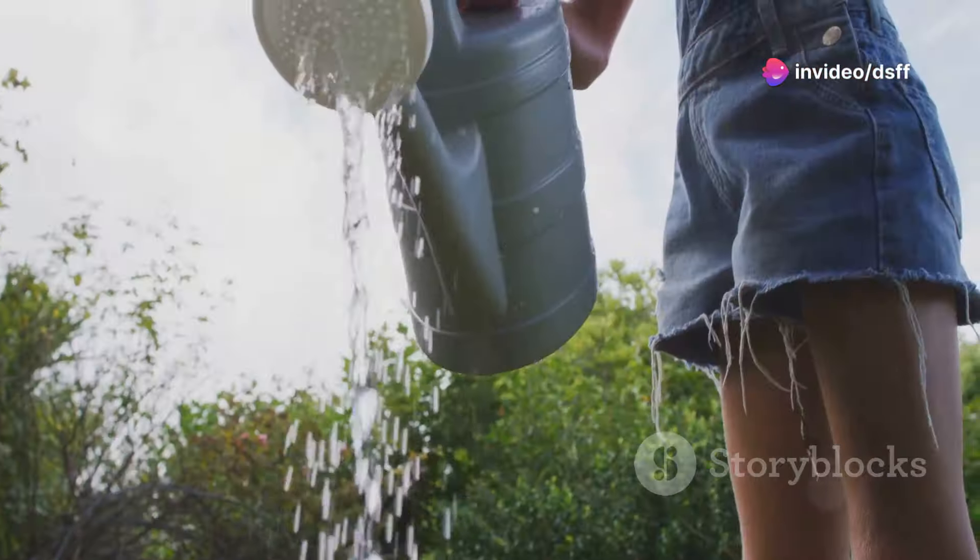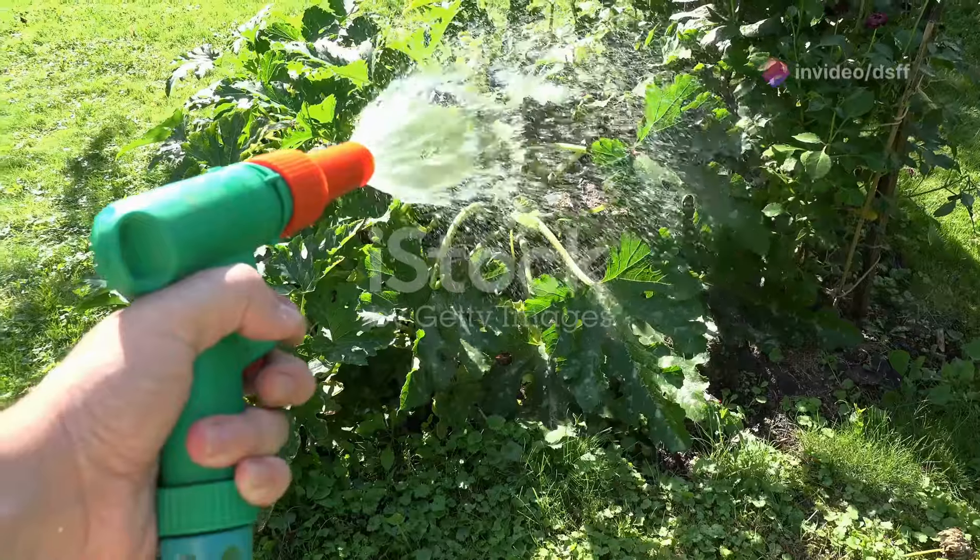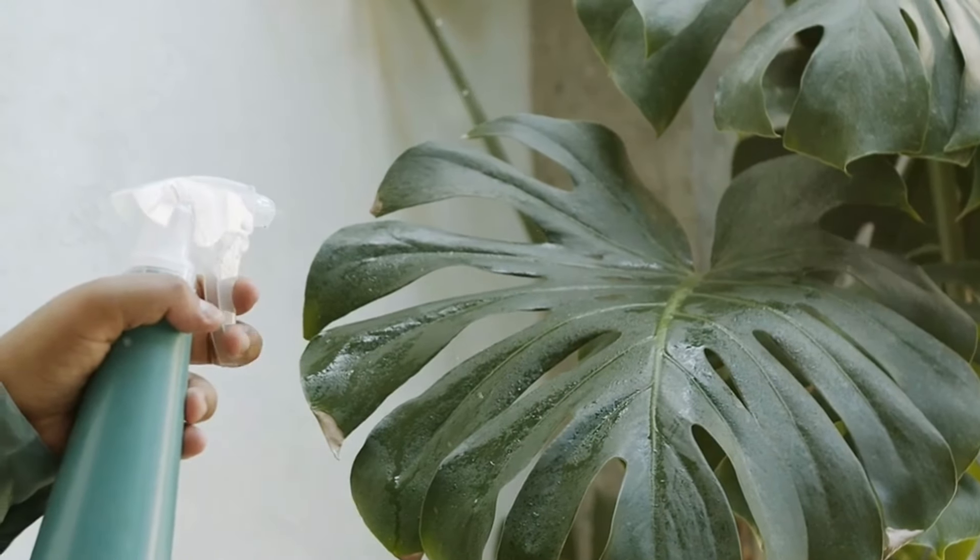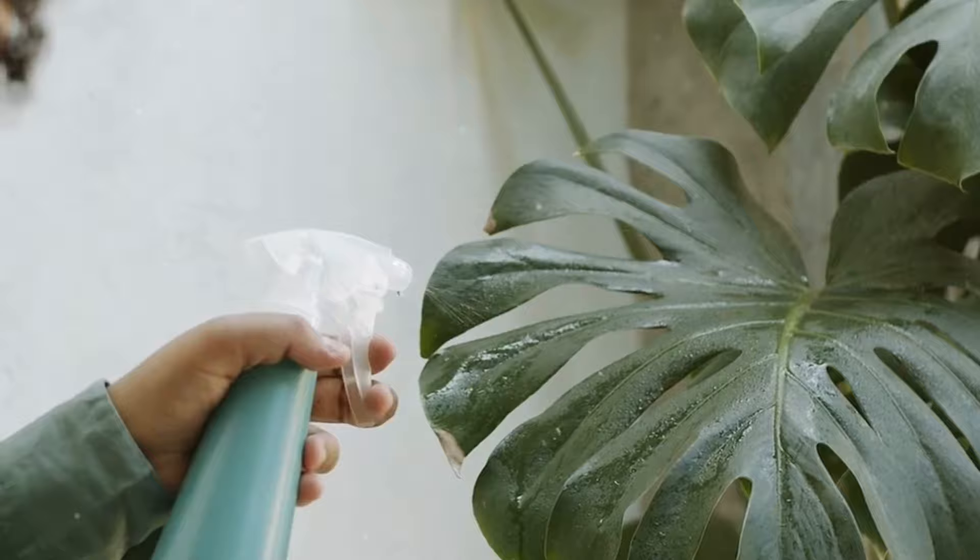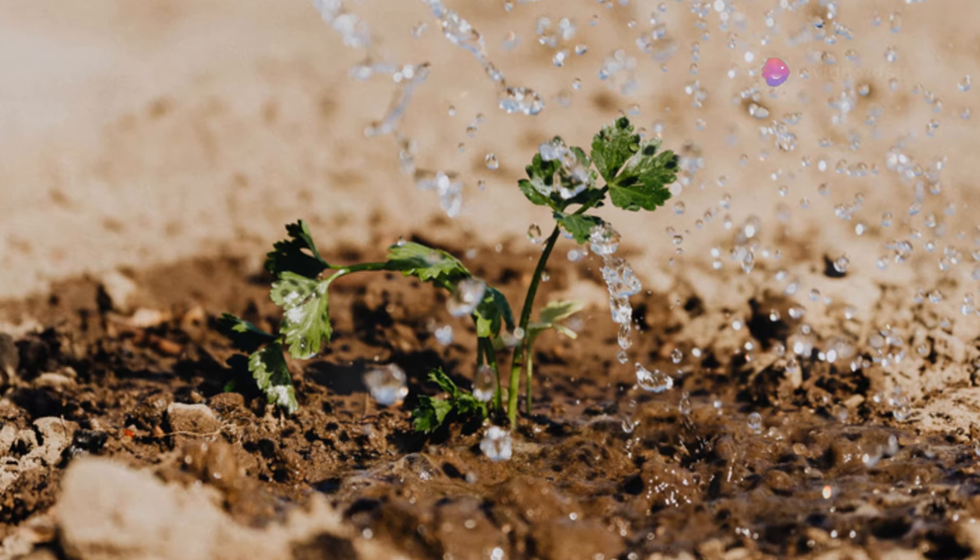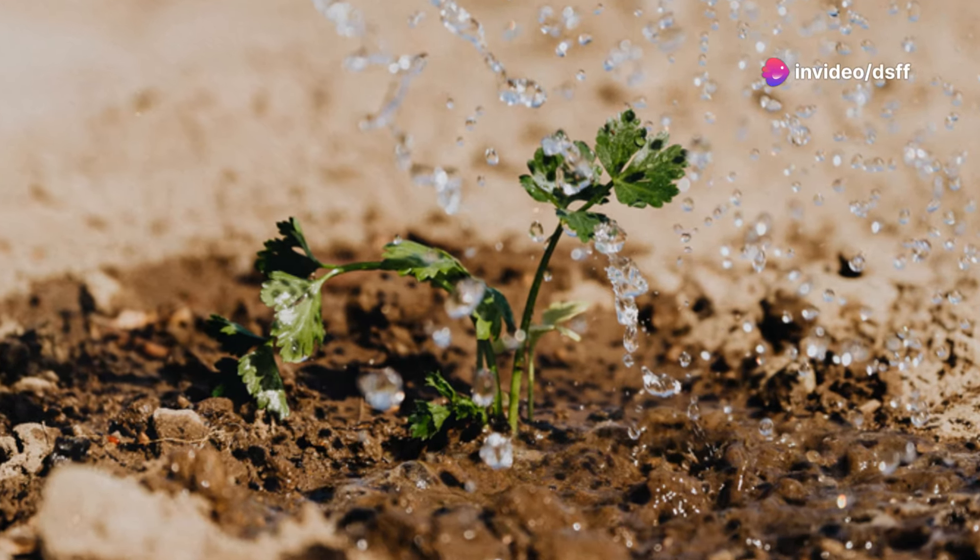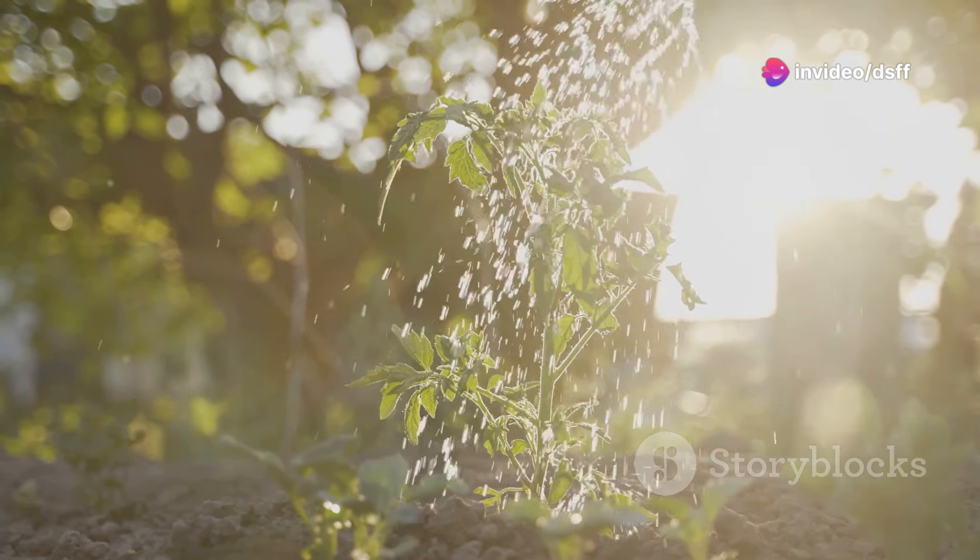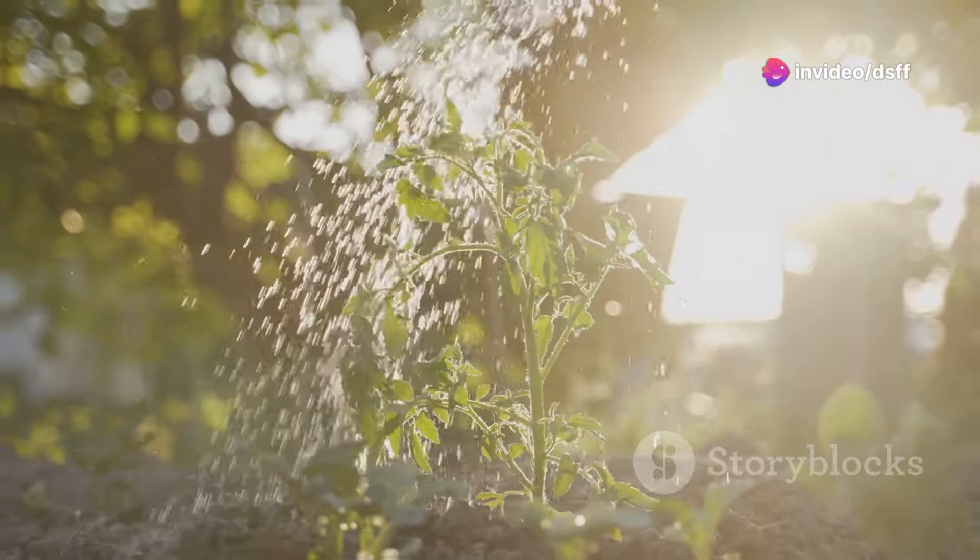Mistake number six is watering the leaves instead of the soil. Watering the leaves can lead to fungal diseases and doesn't effectively hydrate the plant. Always aim to water at the base of the plant directly onto the soil. This ensures the water reaches the roots where it's needed most.